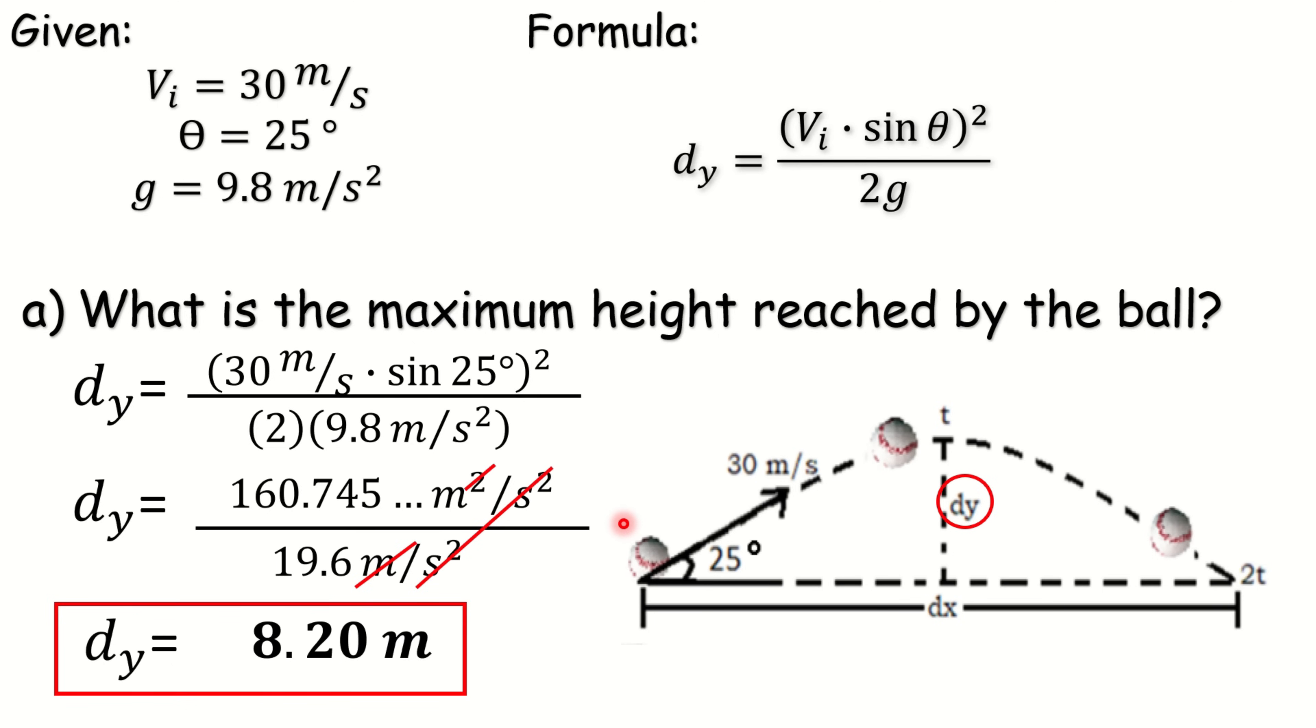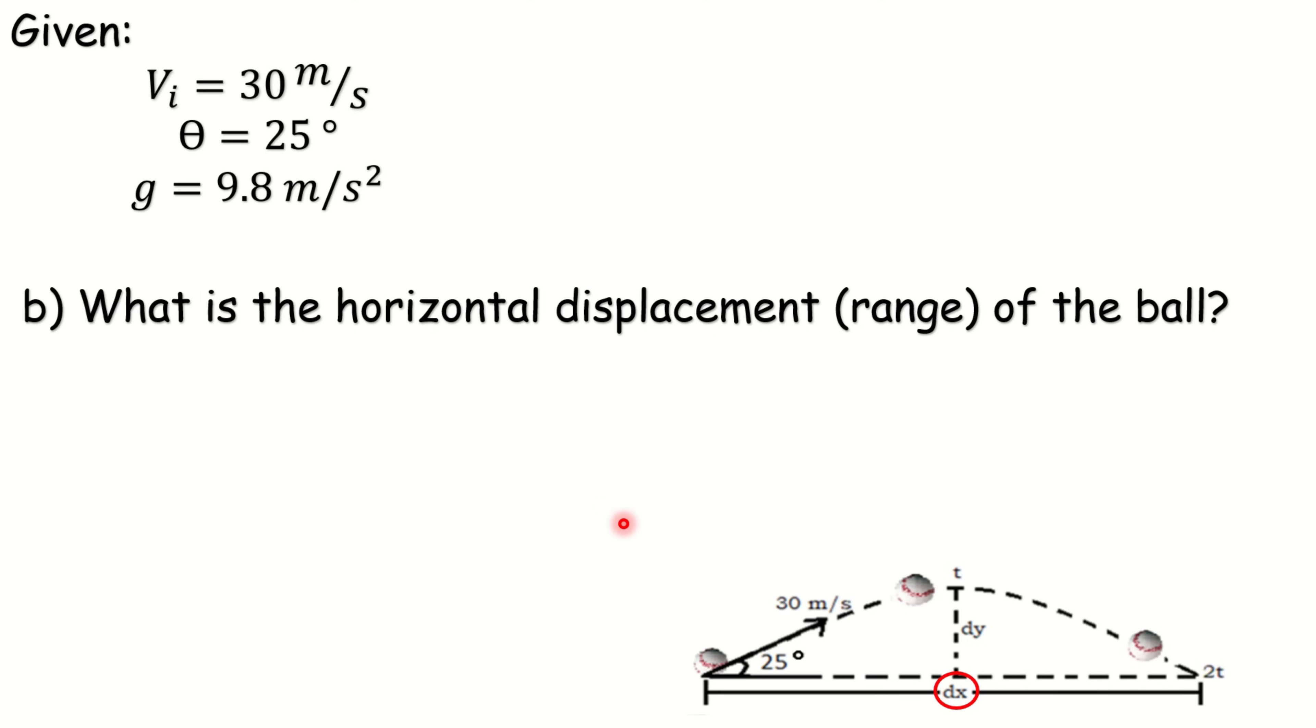Now, let us solve the second one. What is the horizontal displacement or range of the ball? Again, here are our given. The formula that we are going to use to find the DX is just multiplying VI, cosine theta, and the time. As you can see, we do not have the value of time. Therefore, we have to solve the total time to proceed in DX. And this is the formula that we are going to use. So, let us solve it.